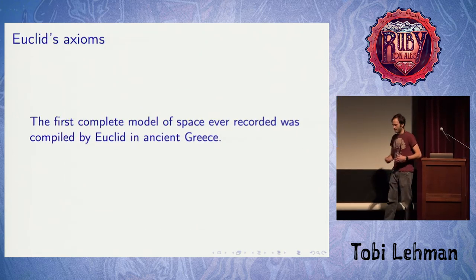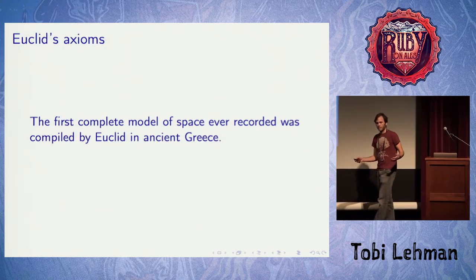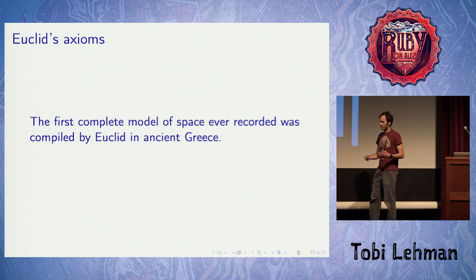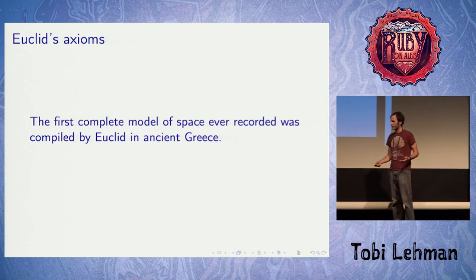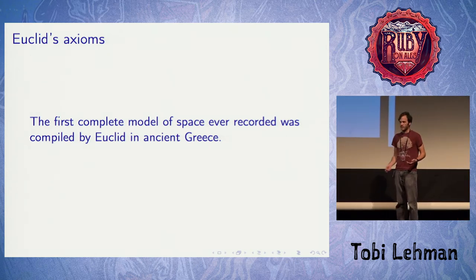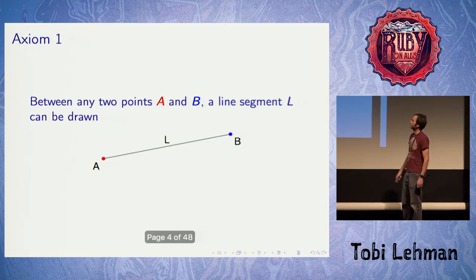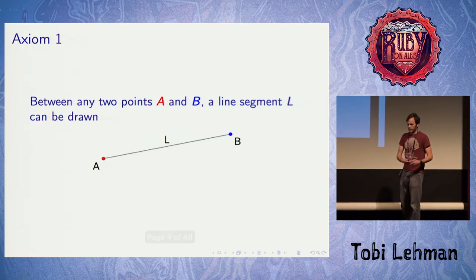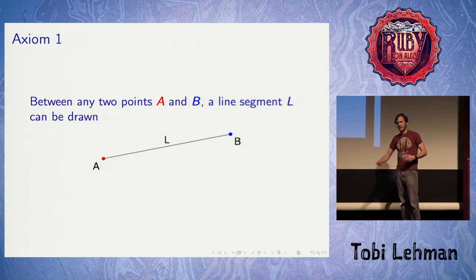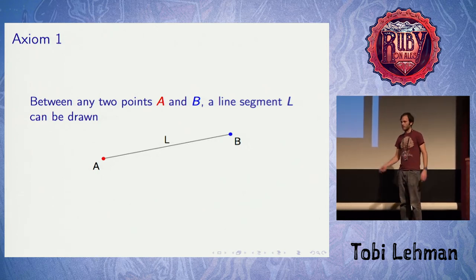The first complete model of space ever compiled was put together by Euclid over 2,000 years ago, and it's still good today. It's good enough to get the Apollo mission to the moon. So we're going to study that. It consists of five axioms and a collection of definitions, but I'm just going to cover the axioms here.